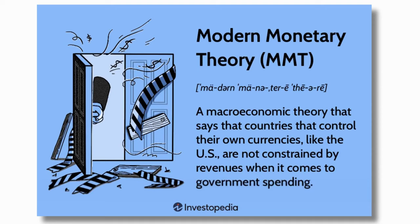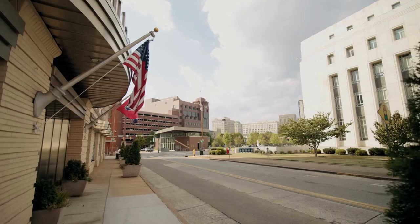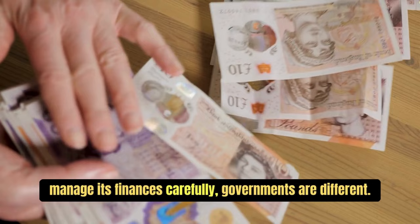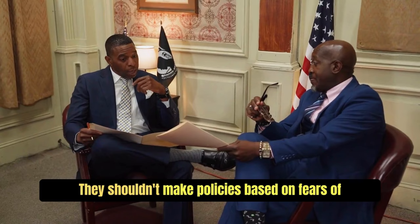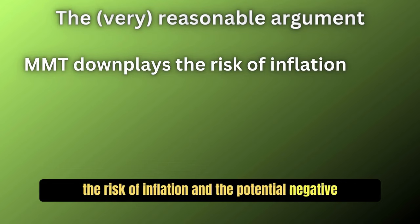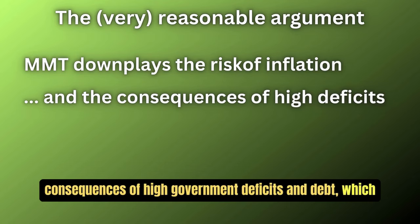In simple terms, modern monetary theory says that governments with their own currency, like the United States, don't need to rely on taxes or borrowing to spend money because they can essentially create as much money as they want. They have the power to print money and control the currency supply. Unlike a regular household, governments shouldn't make policies based on fears of accumulating a large national debt. Critics of MMT argue that it downplays the risk of inflation and the potential negative consequences of high government deficits and debt, which we can see right now.